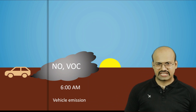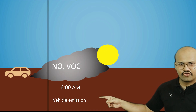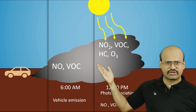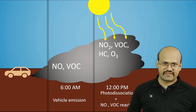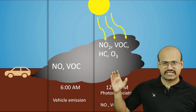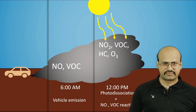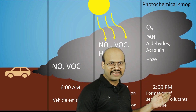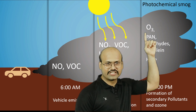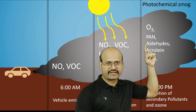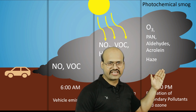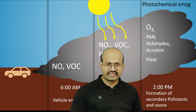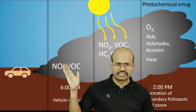As the day progresses toward afternoon, photo dissociation starts and we see formation of NO₂ and ozone. Certain hydrocarbons are also emitted by the vehicles and created by reactions occurring in these gases. By around 2 o'clock we see a full-fledged photochemical smog has formed, containing secondary pollutants like PAN, aldehydes, and acrolein, along with a haze. We also see that the concentration of ozone increases. Later in the video we will understand how this process occurs.